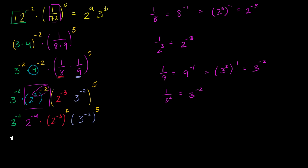So we have 3 to the negative 2 times 2 to the negative 4. Then 2 to the negative 3 raised to the fifth means multiplying those exponents: 2 to the negative 15. And 3 to the negative 2 raised to the fifth — negative 2 times 5 is negative 10 — gives 3 to the negative 10.